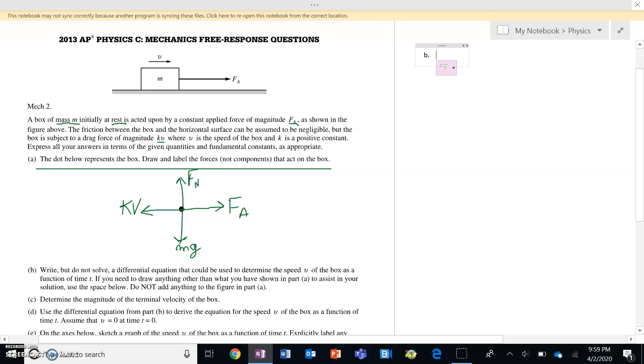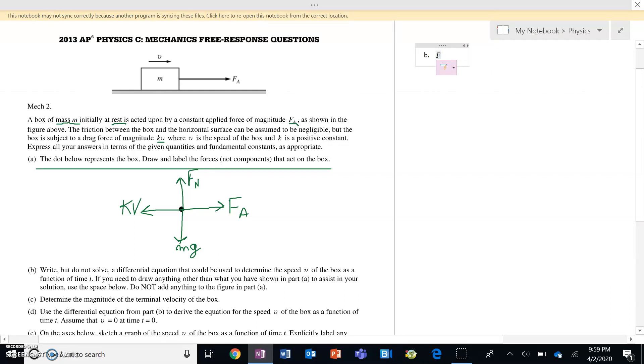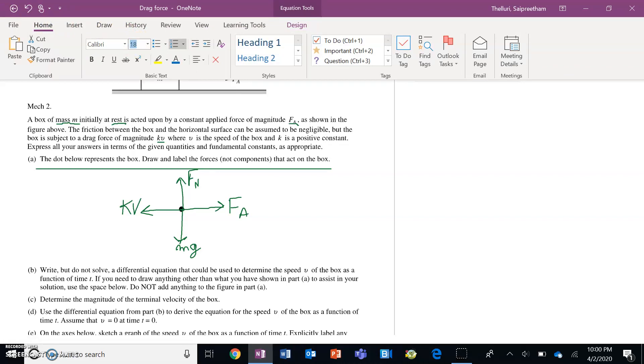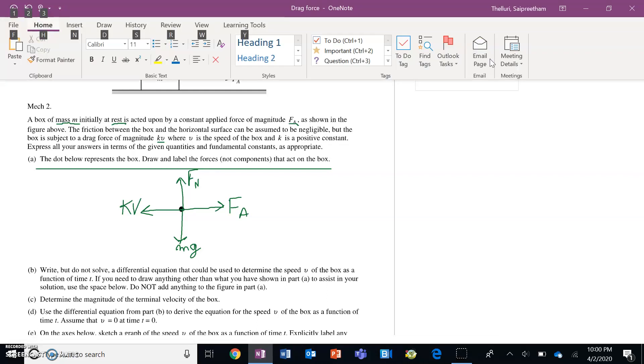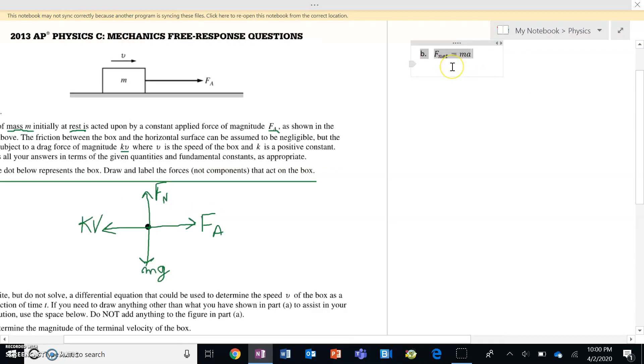Write, but do not solve a differential equation that could be used to determine the speed V. To write a differential equation, the first thing I'm about to do is write a sum of forces equation. And as I know, my net force F_net is equal to MA. For those of you who haven't noticed already, I am typing on the side of my laptop right there in the highlighted range. I'll just make that a little bigger for the convenience of everyone. So let's just increase the font size. There we go.